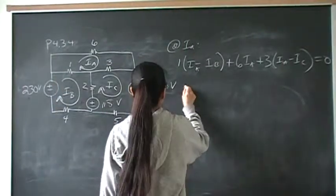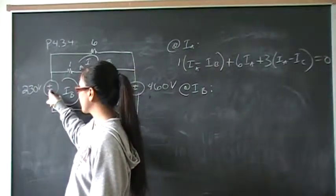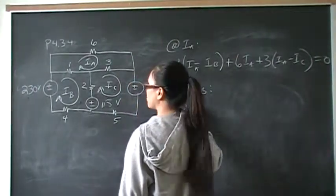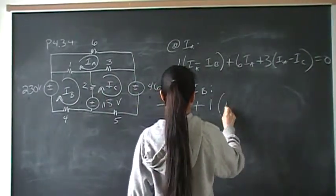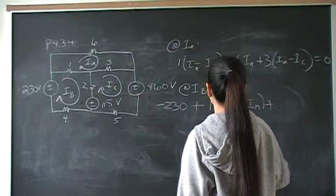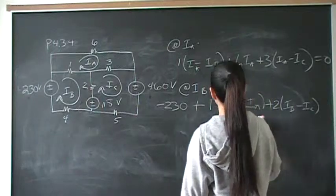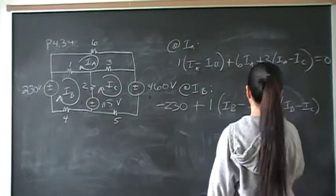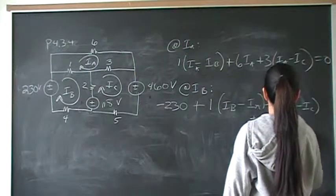Now let's take mesh IB. The first voltage drop — we take the first sign encountered, which is the minus sign — so that's negative 230. Then plus the voltage drop across the one-ohm resistor: 1 times (IB minus IA). Plus 2 times (IB minus IC). Plus 115 volts. Plus 4 times IB. All that has to equal zero.